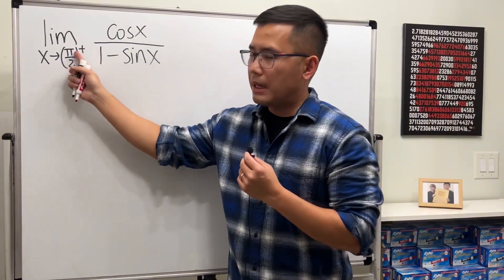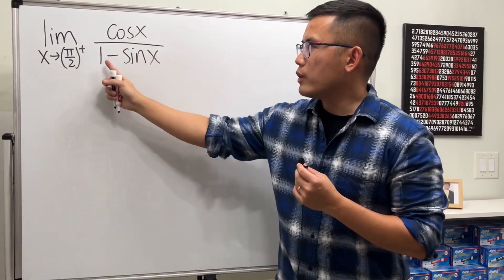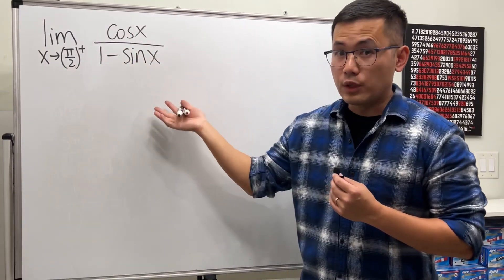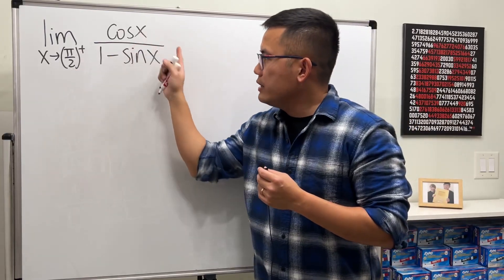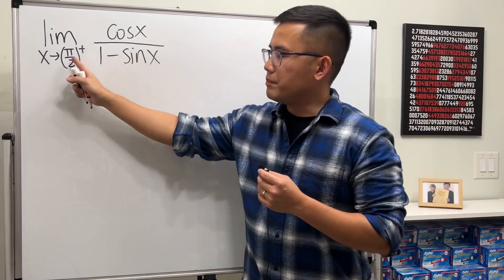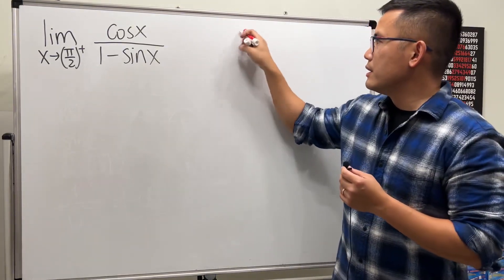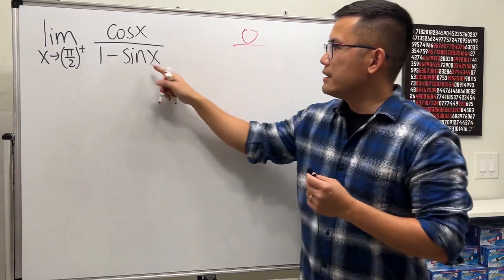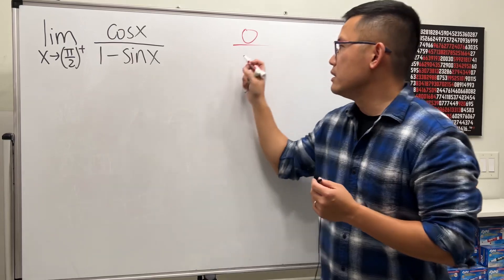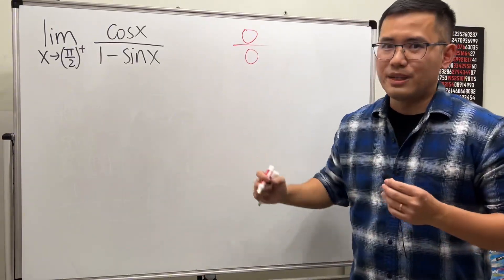Here's another example: the limit as x approaches π/2 from the right of cosine x over one minus sine x. As always, plug in: cosine of π/2 is 0, and sine of π/2 is 1, so 1 minus 1 is 0. We get zero over zero, so we can use L'Hôpital's Rule.